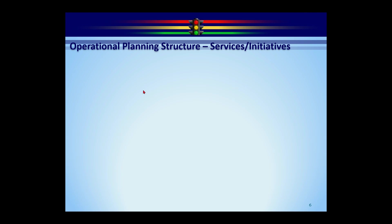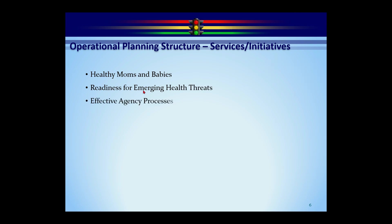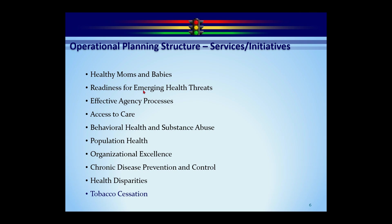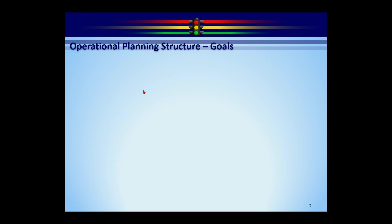The next level down under your group are services or initiatives — I call these the 'big buckets,' the placeholders for what the plans roll up to. Real examples from public health include: Healthy Moms and Babies, Readiness for Emerging Health Threats, Effective Agency Processes, Access to Care, Behavioral Health and Substance Abuse, Population Health, Organizational Excellence, Chronic Disease Prevention and Control, Health Disparities, and for today — Tobacco Cessation.